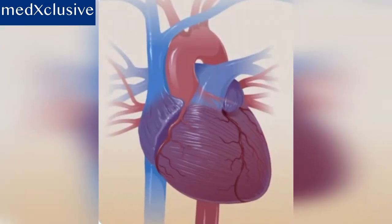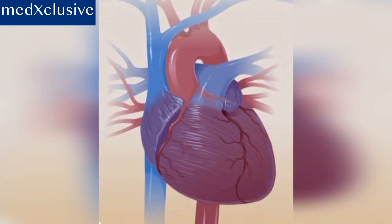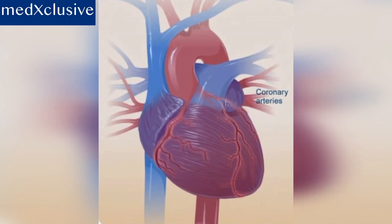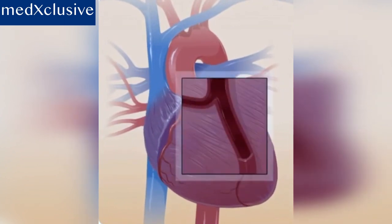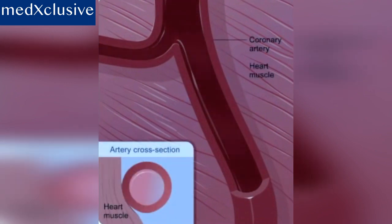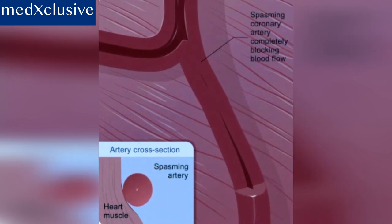Another less common cause of a heart attack is a severe spasm or tightening of a coronary artery that cuts off blood flow to the heart muscle. Spasms can occur in people with or without coronary artery disease. Just as clots may do, spasms can completely block blood flow in the artery.